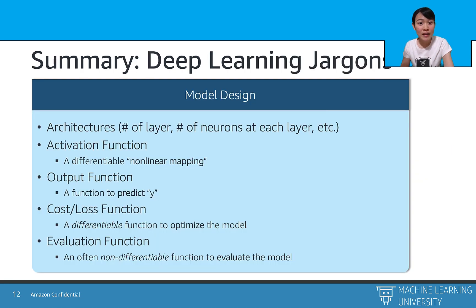I probably have mentioned a lot of terminology through this lecture. Let's have a quick summary of the deep learning jargon. First is the term architectures. This means how do we design the neural networks, such as how many layers it has, how many neurons at the hidden layers, etc. Second is the activation function, which is a differentiable nonlinear mapping that decides whether to fire up a neuron or not. We apply this activation function to the hidden layers.